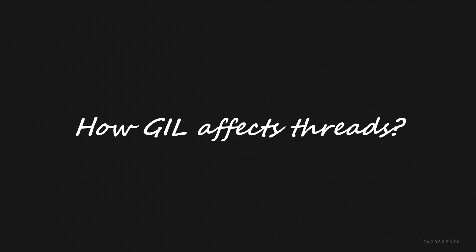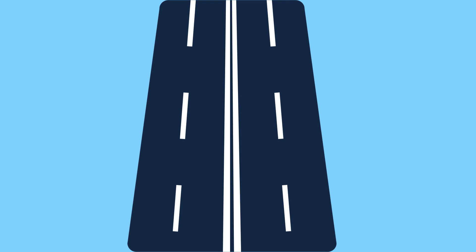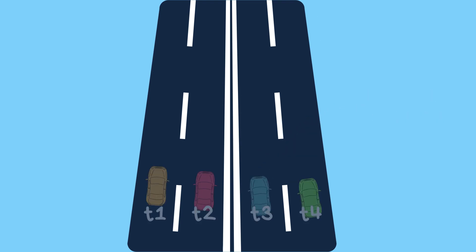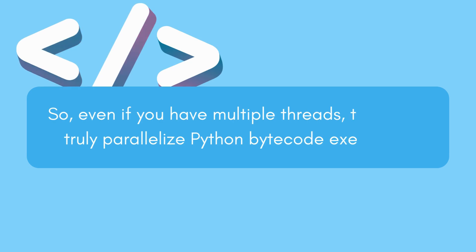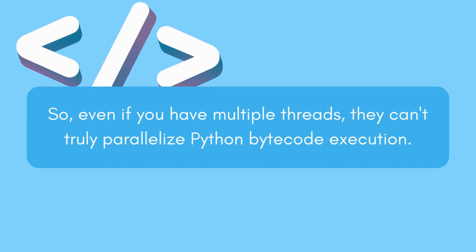But how does it affect threads in Python? Picture this: you have a multi-lane highway representing your CPU cores, but due to the GIL, only one car — which represents a thread — can zoom down the road at a time. So even if you have multiple threads, they can't truly parallelize Python bytecode execution.